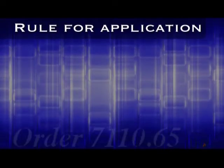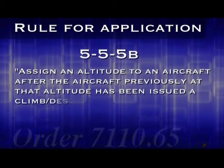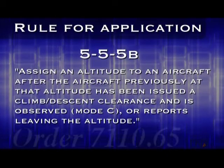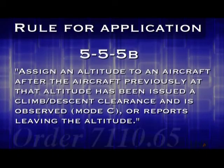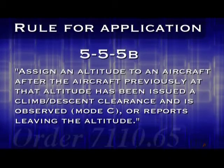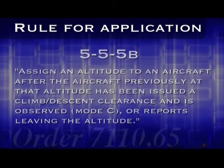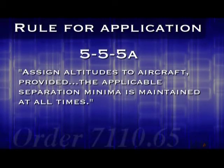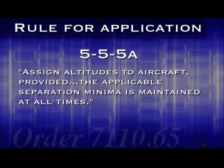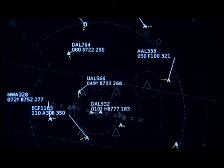Now for the primary rule governing the application of vertical separation. Let's return to Chapter 5, Section 5 and look at Paragraph 5B: assign an altitude to an aircraft after the aircraft previously at that altitude has been issued a climb or descent clearance and is observed with Mode C or reports leaving the altitude. From what it says here, it sounds like the 7110 is saying that the only time you can issue an altitude to an aircraft is if no other aircraft in your sector is already at that altitude. But remember what Paragraph 5A said: assign altitudes to aircraft provided the applicable separation minima is maintained at all times. So as long as at least one other type of separation is maintained, such as three miles of lateral separation, you can descend or climb aircraft to the same altitude.